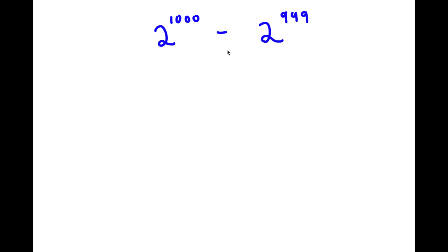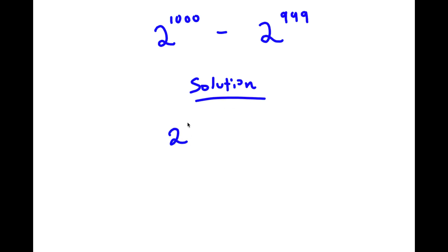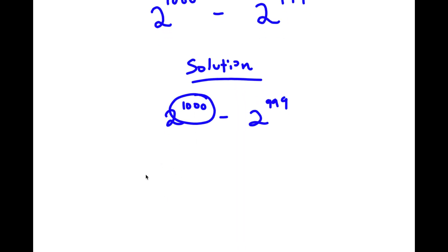In this problem I have 2 to the power of 1000 minus 2 to the power of 999. For my solution, I first start with 2 to the power of 1000 minus 2 to the power of 999. Now I'm going to rewrite 1000 here as 999 plus 1. So now I have 2 to the power of 999 plus 1 minus 2 to the power of 999.